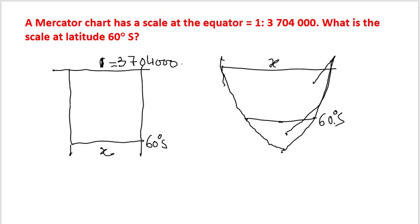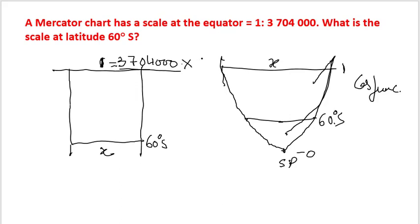At the pole — south pole — it is 0. So if this is 1 at the equator, it is 0 at the pole. So it actually is a cosine function. At 60 degrees south, if we multiply this value with the cosine of the latitude, we will get the value of x.